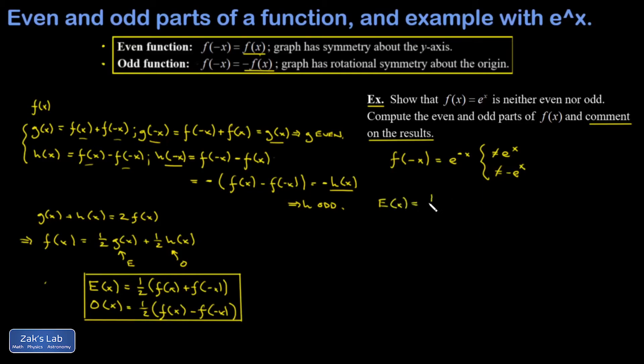E of x is going to be one half times the original function f of x, that's e to the x, plus f of negative x. And this is a cool moment because I just realized that the hyperbolic cosine function is just the even part of e to the x.